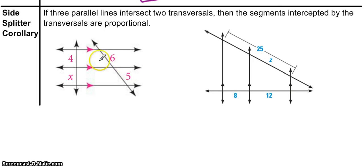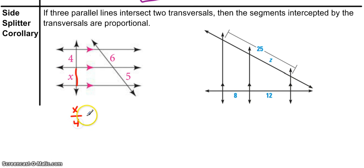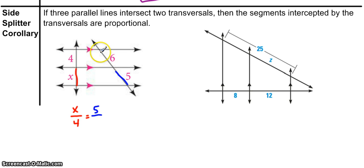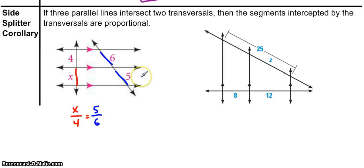Let's apply this to the first problem. Starting with variable X, I write the ratio X to 4. X corresponds to 5 and 4 corresponds to 6, so the proportion is X over 4 equals 5 over 6. Go ahead and solve that — the answer is 3.33, or 3 and one-third.